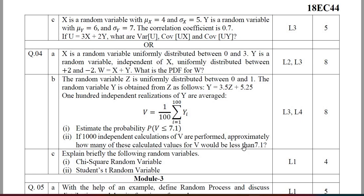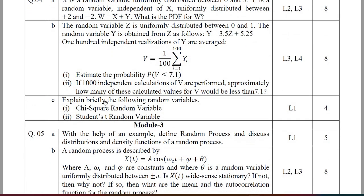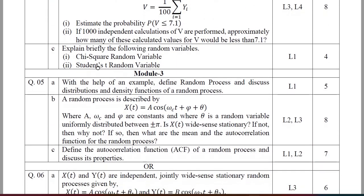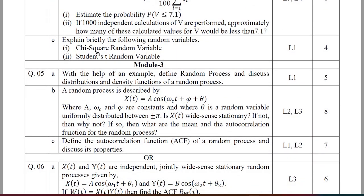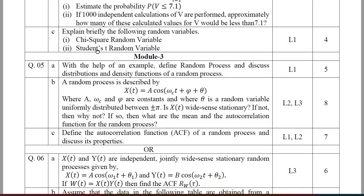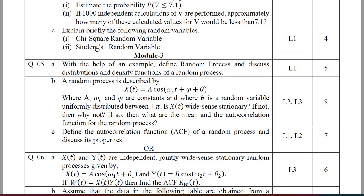Finally, moving on to question number C, you should briefly explain the following random variables: the Chi-square random variable and the student-t distribution random variable. The explanation carries 4 marks.